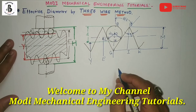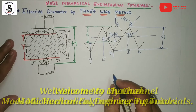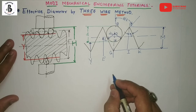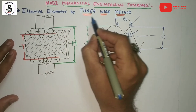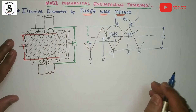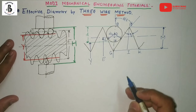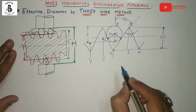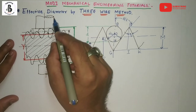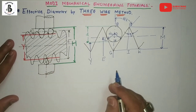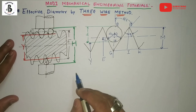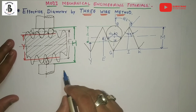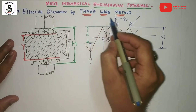Welcome to my YouTube channel Modi Mechanical Engineering Tutorials. Today I would like to explain, or derive, a relationship for the measurement of effective diameter by the three wire method. The three wire method is the most accurate method for measurement of effective diameters. Just consider the geometry, or setup, for the measurement of the effective diameter by the three wire method.